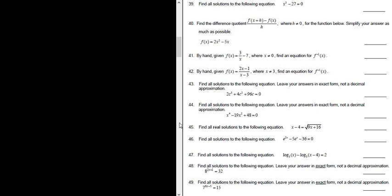Hey, let's do problem number 44. Find all solutions to the following equation: x to the fourth power minus 19x squared plus 48 equals 0.